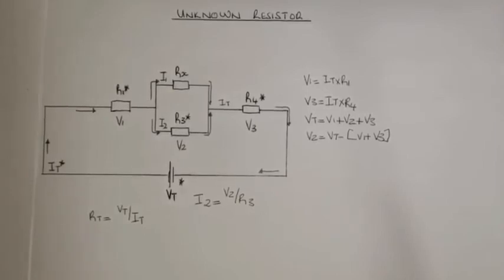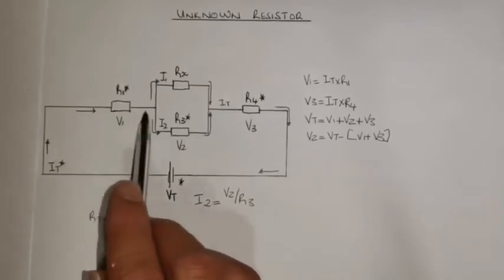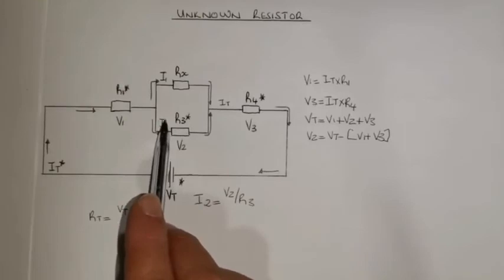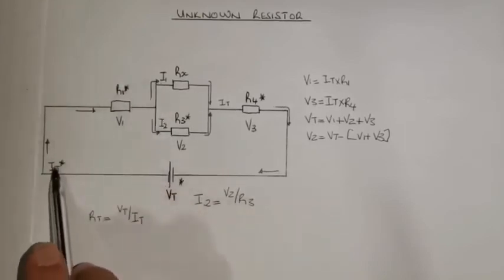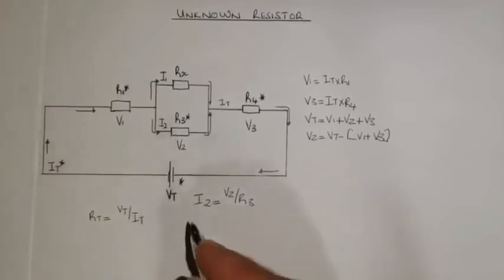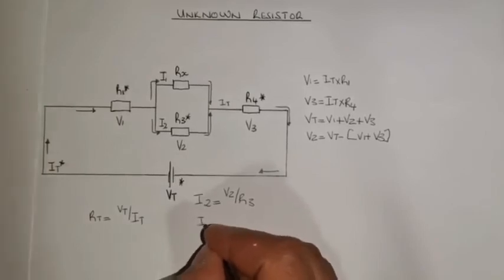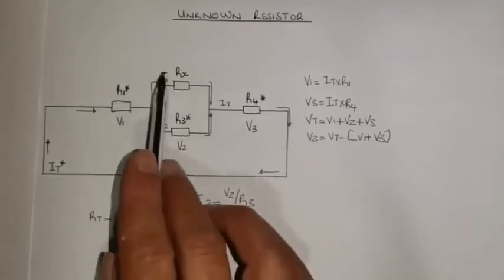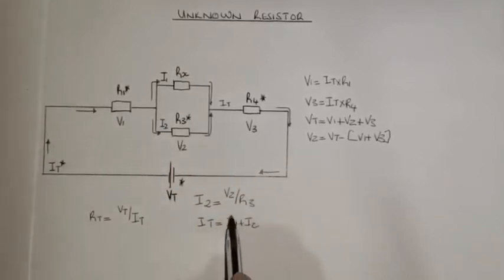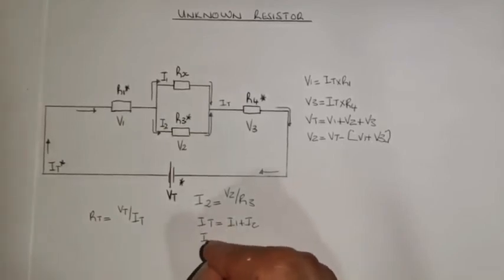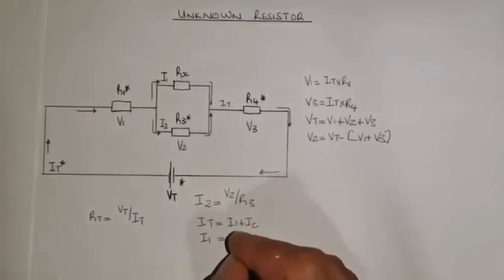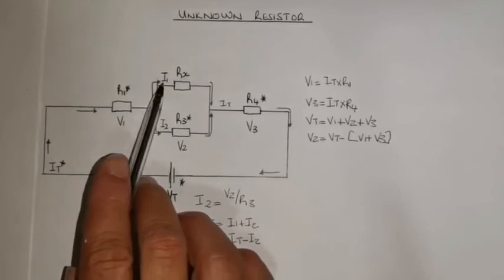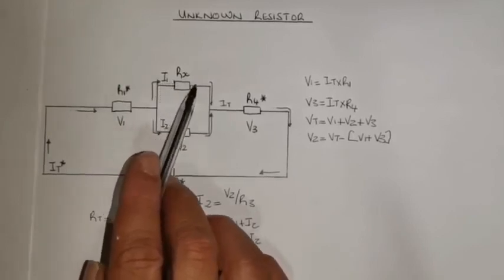The next thing I can do is recognize that my total current flows toward that junction point, where it splits two ways. So I can use Kirchhoff's current law because I have I_total and I have I2. Kirchhoff's current law says I_total equals I1 plus I2 in this circuit, since there are only two currents that split at that junction. I need I1, so I make it the subject: I1 equals I_total minus I2. There I get the current I1 flowing through Rx.